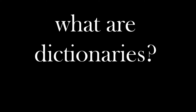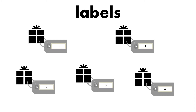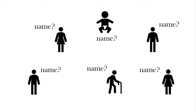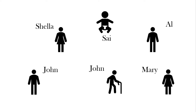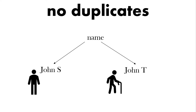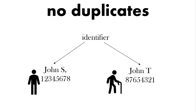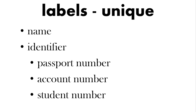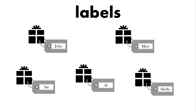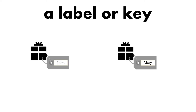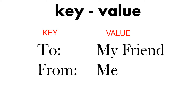So what are dictionaries? Instead of using indexes we use labels. Here we have labels from 0 to 4. We can identify people by their name, but we need a unique name — no duplicates. In real life we have unique identification such as a passport number, account number, or student number. These are unique labels, also called keys. So we have a key-value pair.